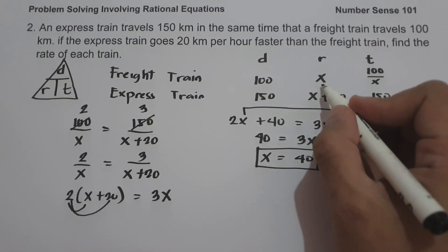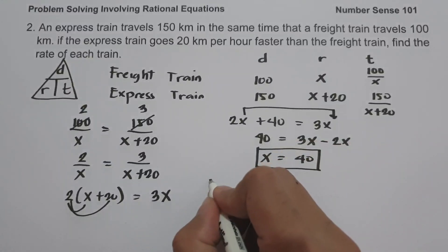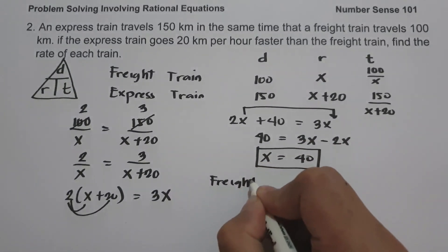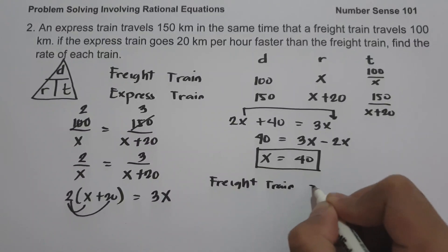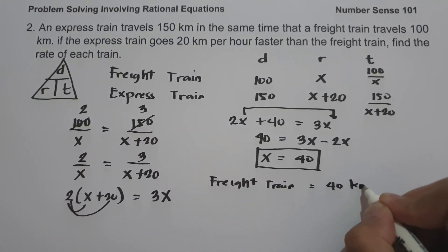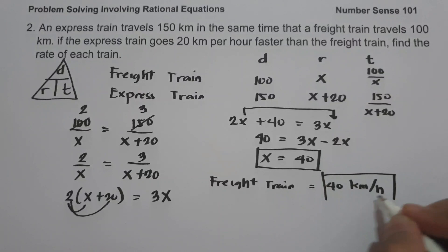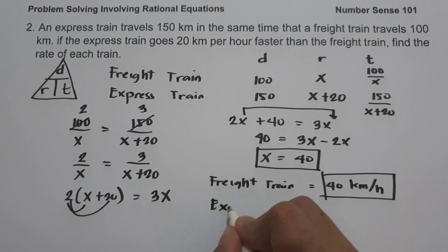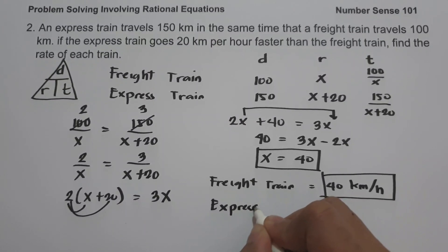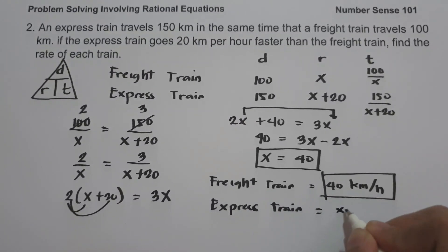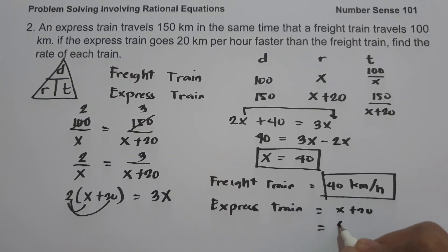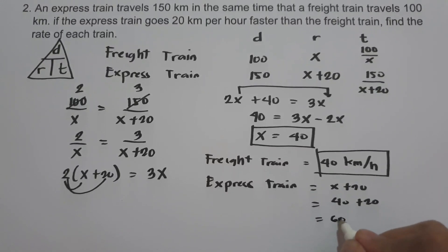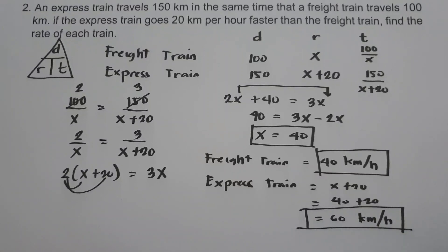Since we represented x as the rate of the freight train, therefore the rate of the freight train is 40 kilometers per hour. To determine the rate of the express train, we have x plus 20, that is 40 plus 20, which gives us 60 kilometers per hour. And this will be our answer.